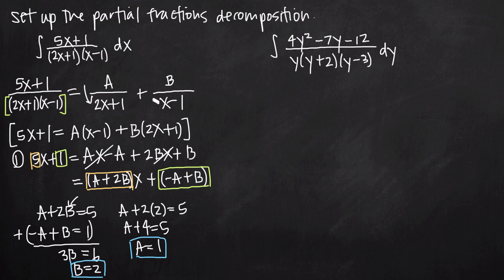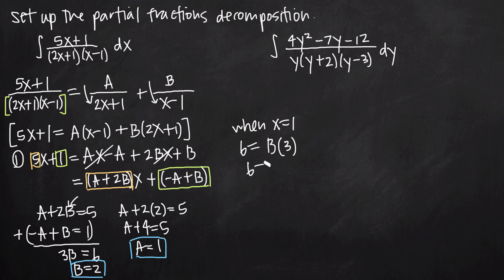We know we're going to look at 2x plus 1 and x minus 1. When x equals 1, plugging into both sides: the left hand side gives 5 times 1 plus 1 equals 6. On the right hand side, 1 minus 1 is 0, so 0 times A drops away. We get 6 equals b times 3, or 6 equals 3b, so b equals 2.